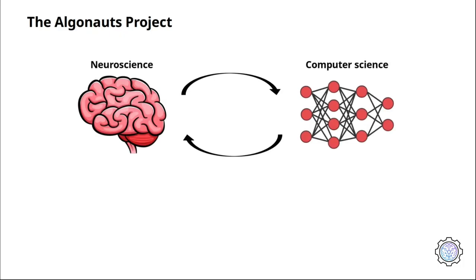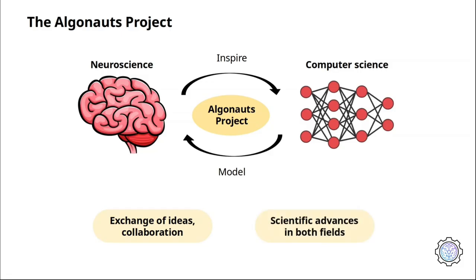Let's start with what the Algonauts Project is. There is a growing symbiosis between biological and artificial intelligence sciences. Neural principles inspire new intelligent machines which are in turn used to model and advance our understanding of the brain. Along these lines, the Algonauts Project is a platform that aims at promoting further exchange of ideas and collaboration between biological and artificial intelligence researchers to accelerate scientific advances in both fields.